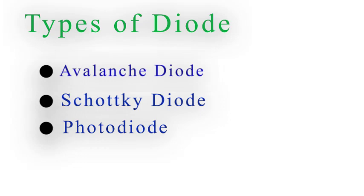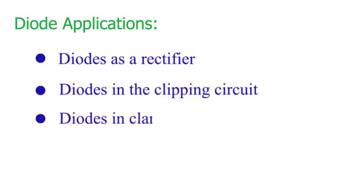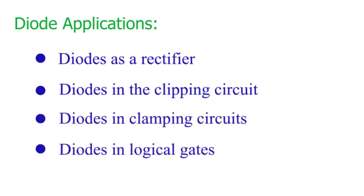There are a number of applications of diodes. Diodes act as rectifiers and are used in clipping circuits as well as clamping circuits. Diodes are used in different types of logic gates.